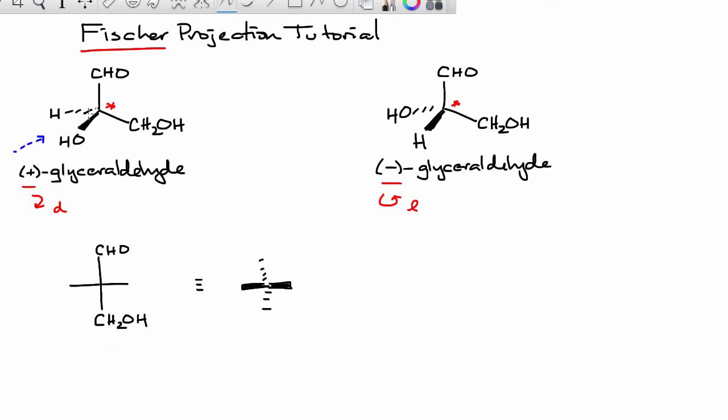Now we're going to depict the stereochemistry at the chirality center. The OH is going to be towards the right. It's projected out towards us. The hydrogen is going to be on the left. We can fill that in, in this wedge dash representation as well.